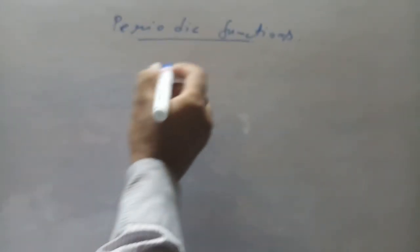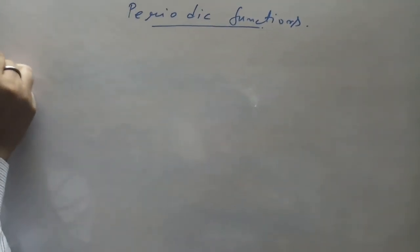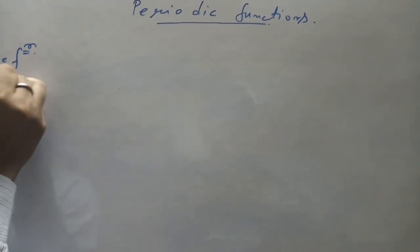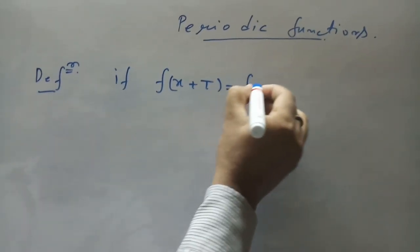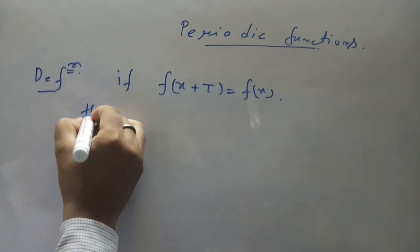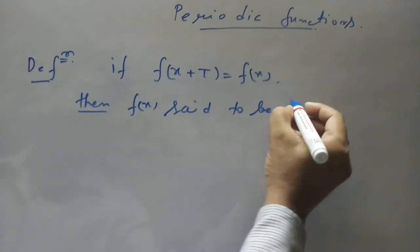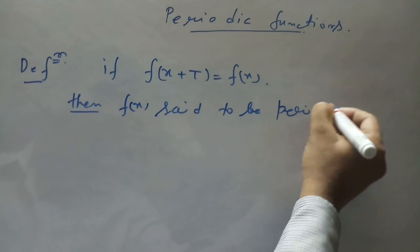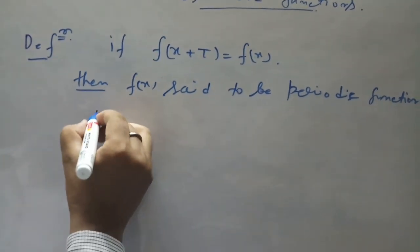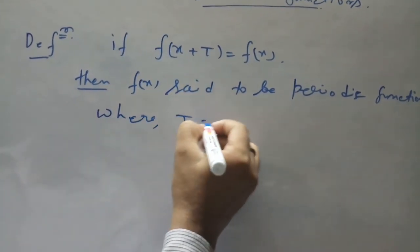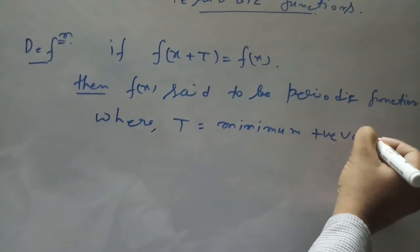We are learning about the periodic function. What is the definition of periodic function? The definition of periodic function is: if f(x + t) equals f(x), then f(x) is said to be a periodic function, where t is the minimum positive value.